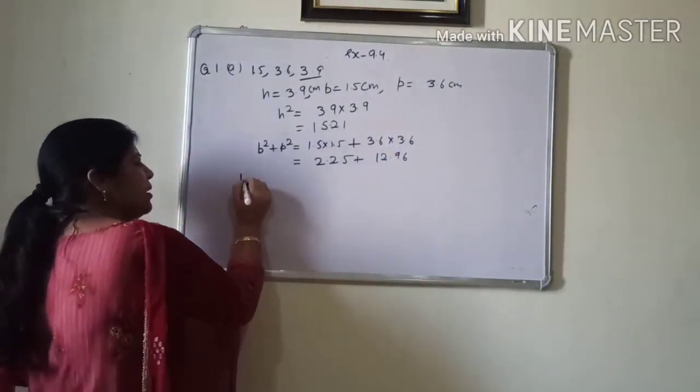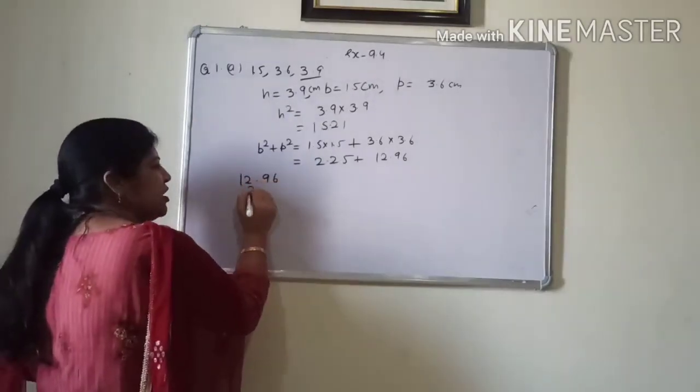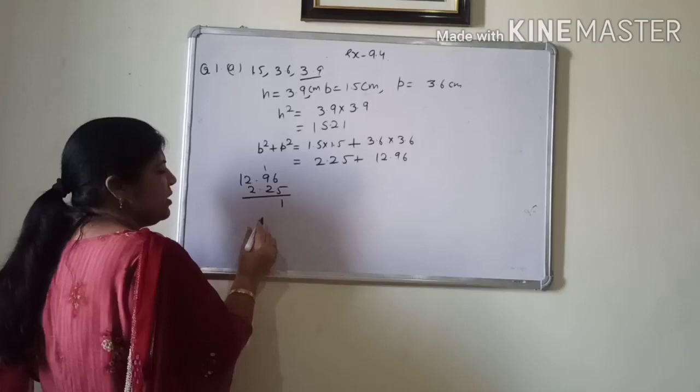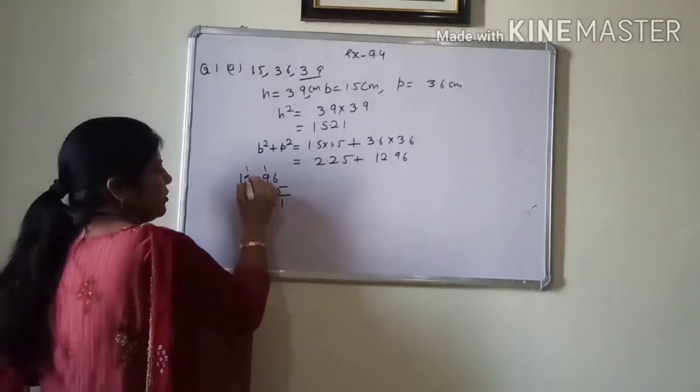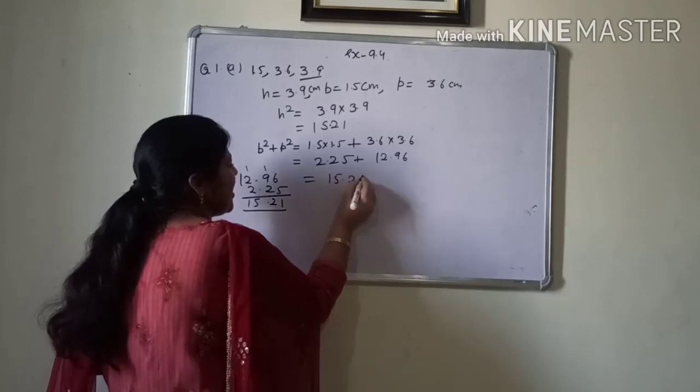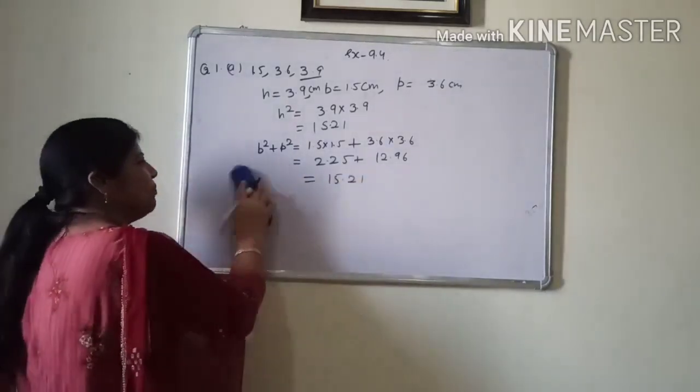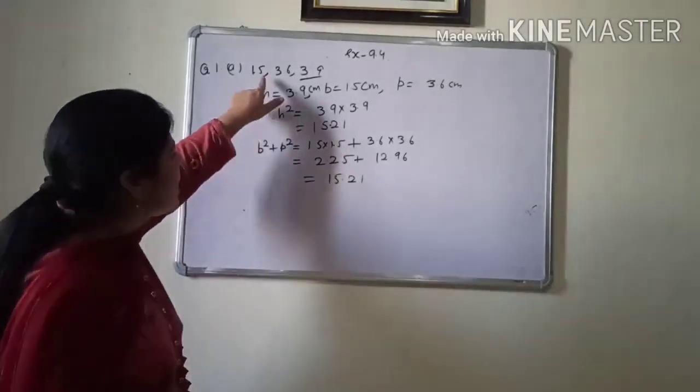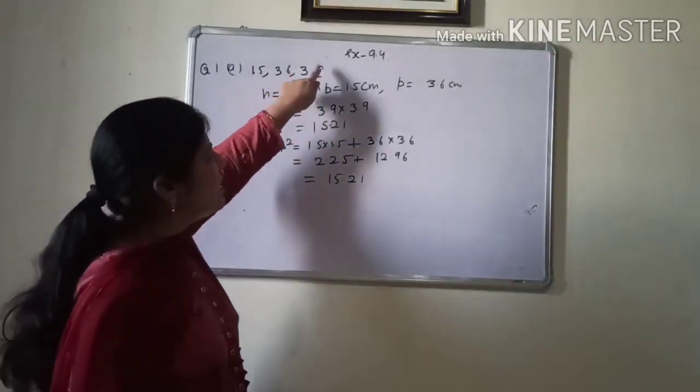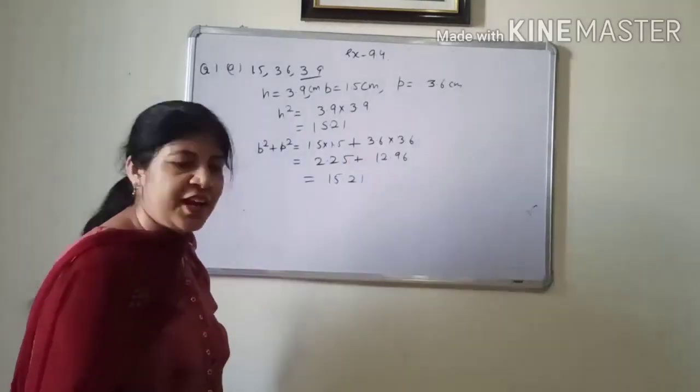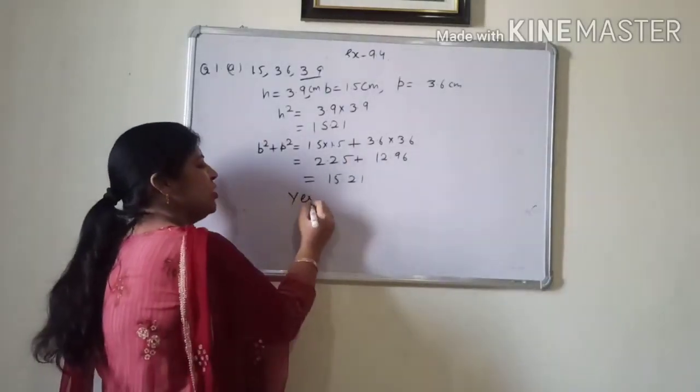Now, add these two numbers. 12.96 plus 2.25, 6 and 5 is 11. You will get 15.21. Both are same. It means these are also the possible sides of a right angle triangle. So, you will write yes.